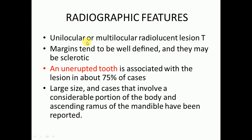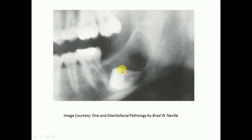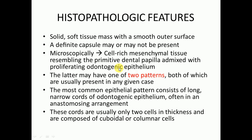Regarding radiographic features, it will be a unilocular or multilocular lesion. The margins tend to be well defined and may have sclerotic borders. It may be associated with an unerupted tooth in 75% of cases. Larger lesions involving a considerable portion of the body and ramus of the mandible have been reported. Here we have an unerupted second molar associated with the ameloblastic fibroma — it is a radiolucent lesion.